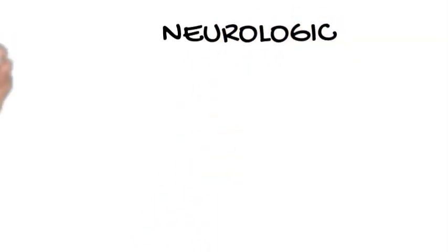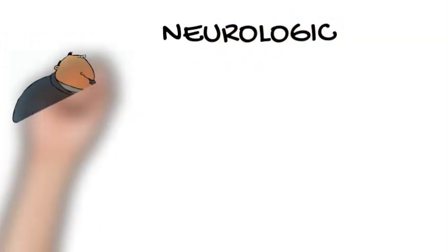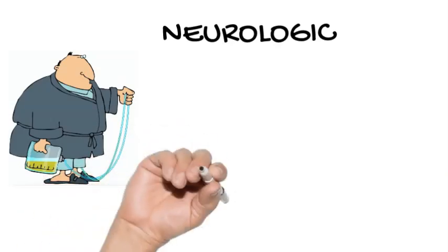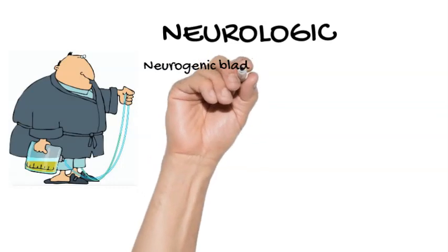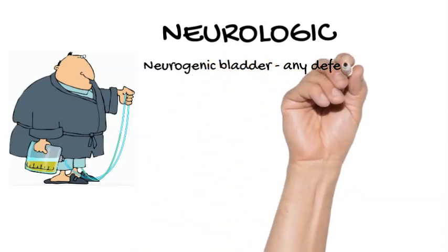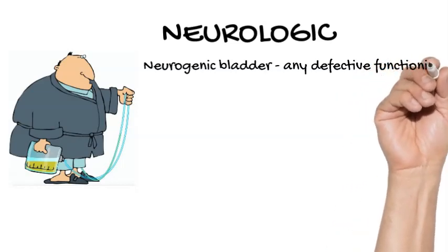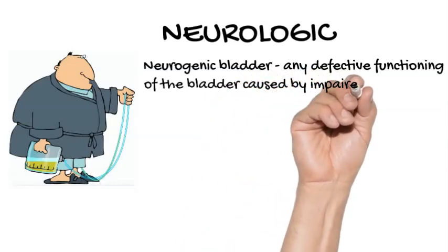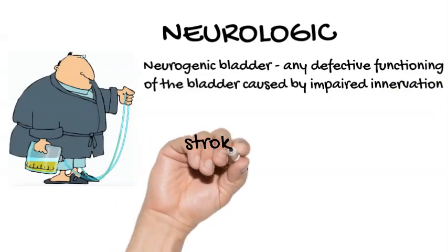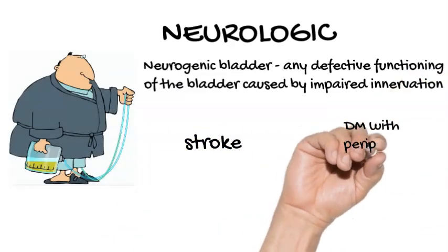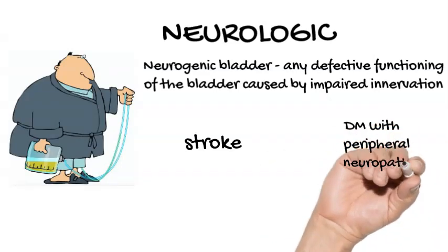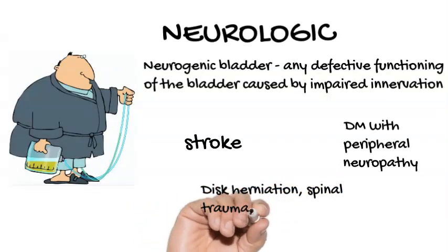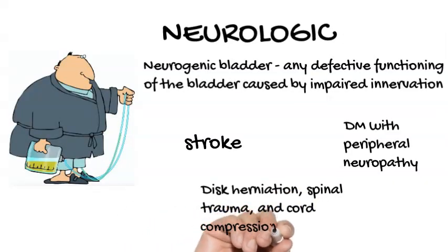Neurologic causes. Neurogenic or neuropathic bladder is defined as any defective functioning of the bladder caused by impaired innervation. Urinary retention from neurologic causes occurs equally in men and women. Although most patients with neurogenic bladder will experience incontinence, a significant number might also have urinary retention. Patients who have suffered a stroke may experience urinary retention, primarily because of detrusor hyperreflexia. Patients with diabetes mellitus and diabetic peripheral neuropathy may experience bladder dysfunction including urinary retention. Disc herniation, spinal trauma, and cord compression from benign or malignant tumors may cause urinary retention through interruption of spinal pathways.